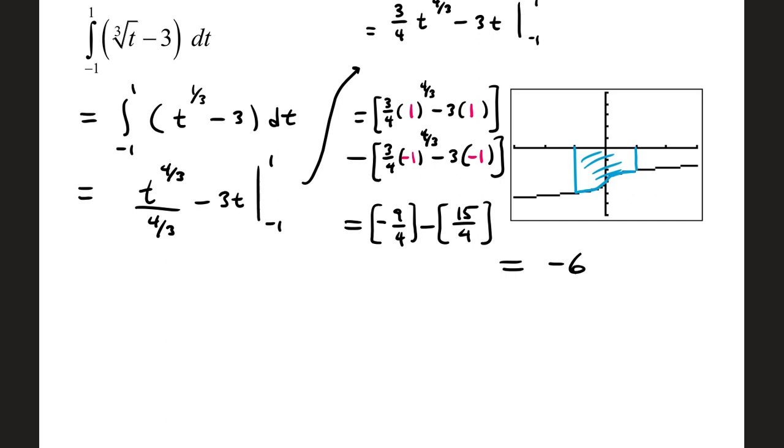And so now we can carry out our procedure for the antiderivative. One-third plus 1 is four-thirds. Divide by that result. Your second term, negative 3, has an antiderivative of negative 3t. For any constant, you just stick the variable to it. Antiderivative evaluated at 1, and antiderivative evaluated at negative 1. It's the top minus the bottom, once you've set those into the antiderivative.